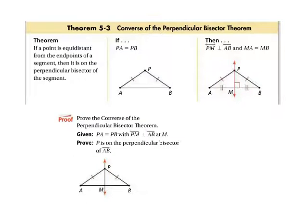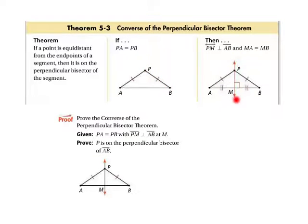Now let's take a look at the converse of the perpendicular bisector theorem. If a point is equidistant from the endpoints of a segment, then it is on the perpendicular bisector of the segment. So if the length of segment PA equals the length of segment PB, then line PM is perpendicular to segment AB and the length of segment MA equals the length of segment MB.